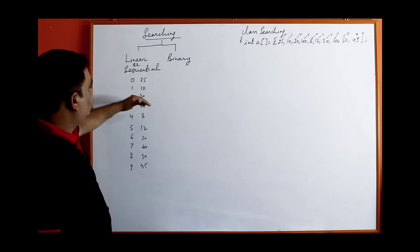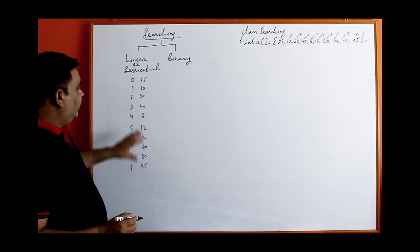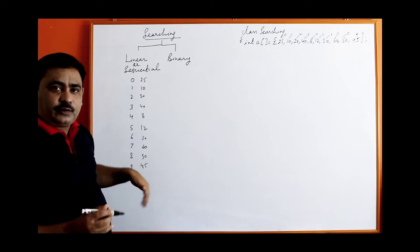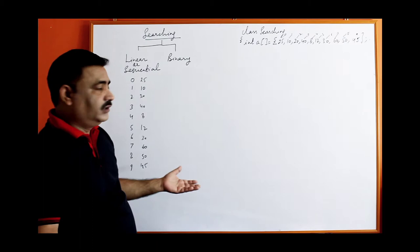Sequential searching means you have to search a value in the array sequentially, one by one. If the value is present in the array, then you have to display its index — the value is present at this index. If the value is not present, then there should be a message: value does not exist or not found.